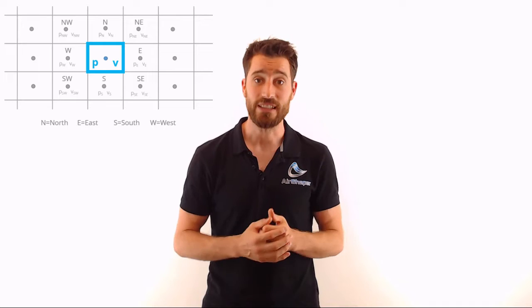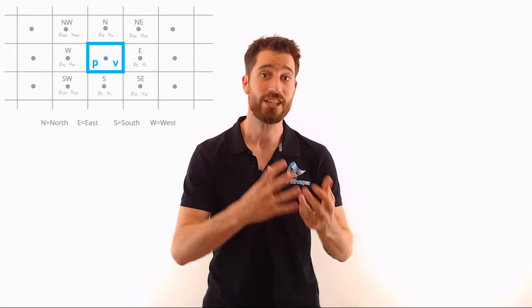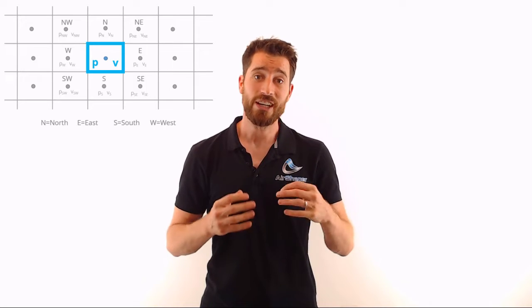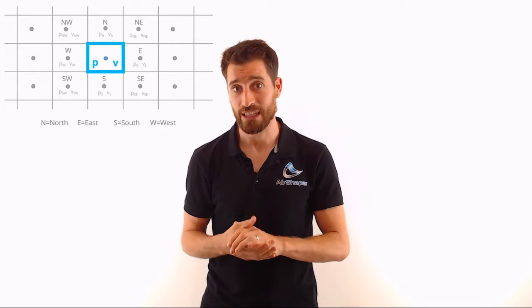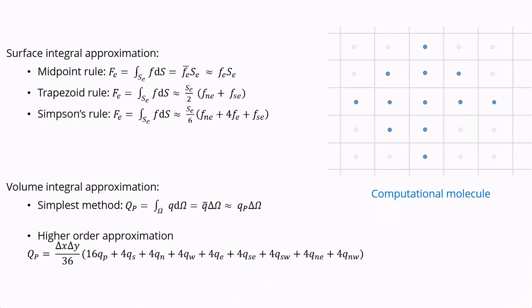For each of these cells, we can approximate the continuous Navier-Stokes equations with discrete algebraic ones. These allow us to calculate the pressure and velocity at the center of each cell, also called a node, based on the pressure and velocity values of the surrounding nodes. The higher the order of these discrete approximations, the more surrounding nodes are included. This reach of a single node is called a computational molecule, resulting in a set of algebraic equations for each node.